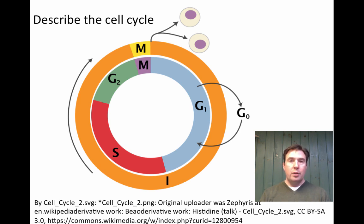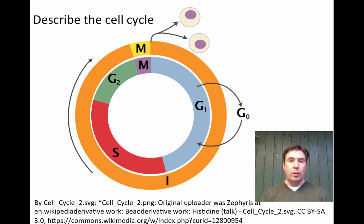Cells spend the bulk of their time growing, being metabolically active, and preparing for division. They spend very little of their life cycle in mitosis. If you look at onion root tips and count cells in various stages, you'll see the vast majority are in interphase. Within interphase we have G1, S, and G2, representing different periods of growth and metabolic activity. There is also G0 phase, when some cells opt out of the cell cycle entirely — for example, an adult neuron may never divide again and jumps out into G0.